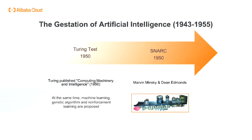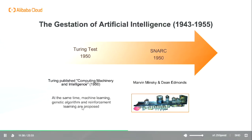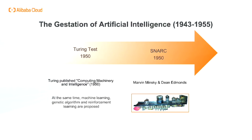Minsky was later to prove influential theorems showing the limitations of neural network research. There were a number of early examples of work that can be characterized as AI, but Alan Turing's vision was perhaps the most influential. He gave lectures on the topic as early as 1947 at the London Mathematical Society and articulated a persuasive agenda in his 1950 article, 'Computing Machinery and Intelligence.' Therein, he introduced the Turing test, machine learning, genetic algorithms, and reinforcement learning. He proposed the child program idea, explaining: 'Instead of trying to produce a program to simulate an adult mind, why not try to produce one which simulates the child?'